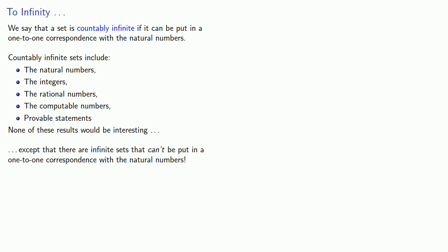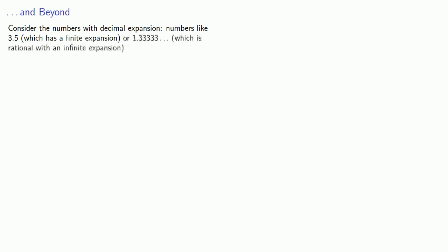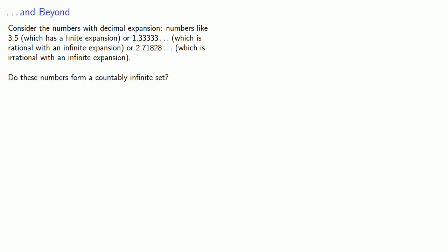And that has some very disturbing implications. Let's consider the numbers with decimal expansions — numbers like 3.5, which has a finite expansion, or 1.3 repeating, which is rational with an infinite expansion, or something like this, which is irrational with an infinite expansion. Do these numbers form a countably infinite set? Well, let's find out.